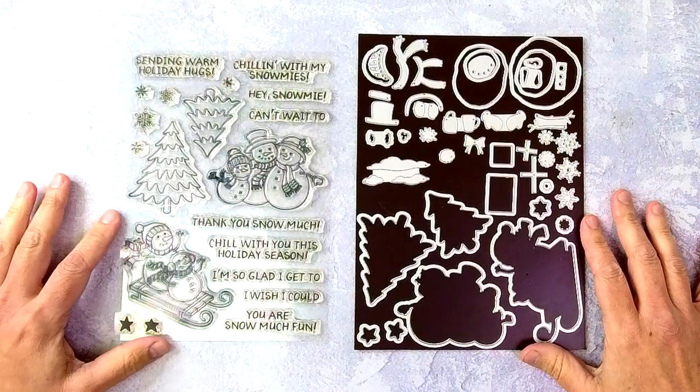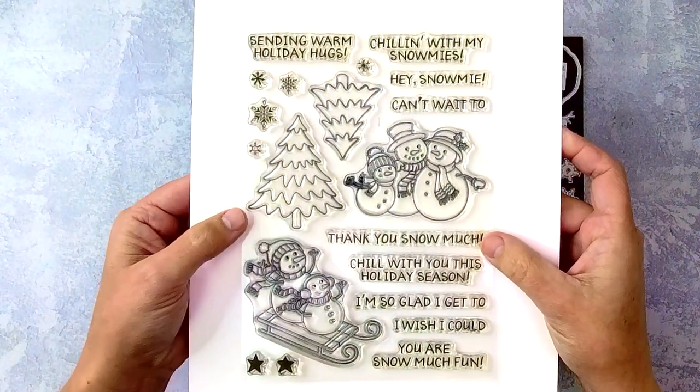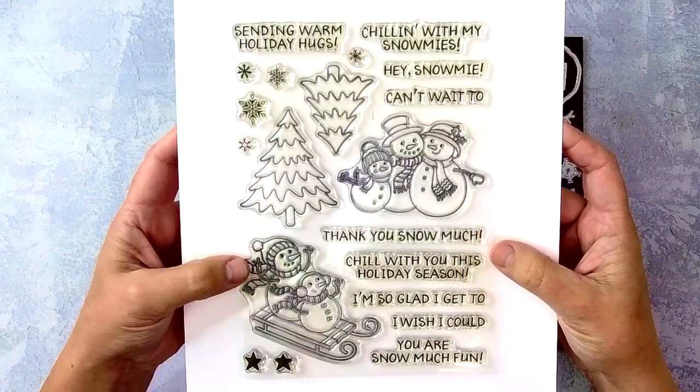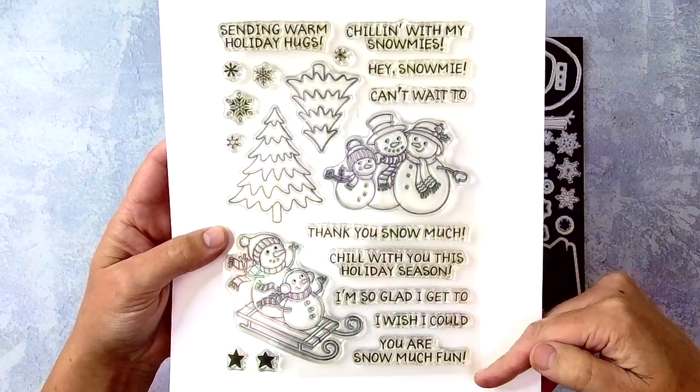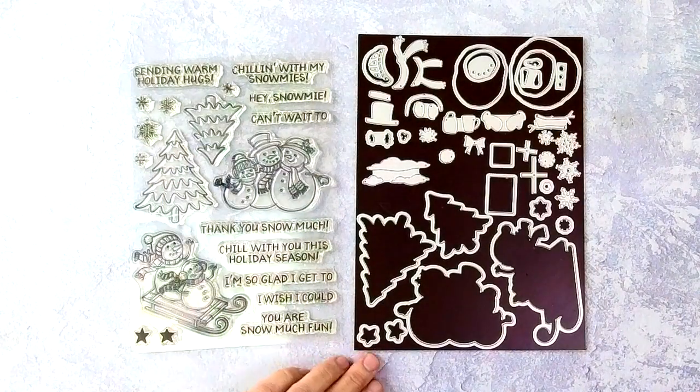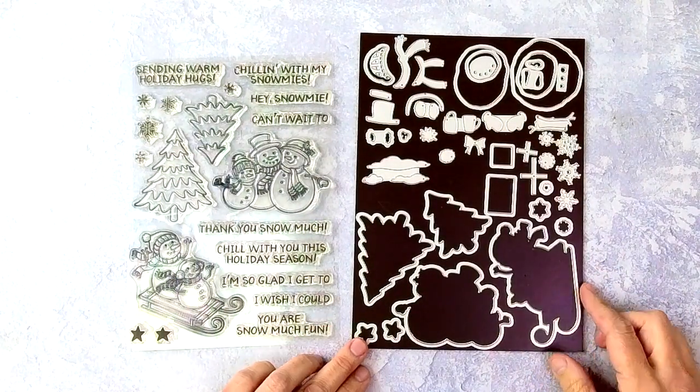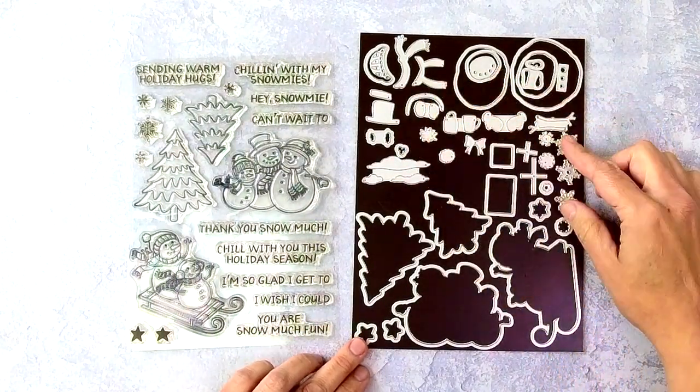This month when you get your Snowmys Stamp Club bundle, you're going to get a 6x8 stamp set that has some really great images and some very funny sentiments to go along with it. And then you're also going to get a coordinating die set that has both coordinating and standalone dies.